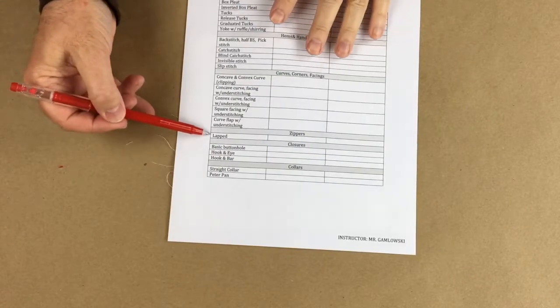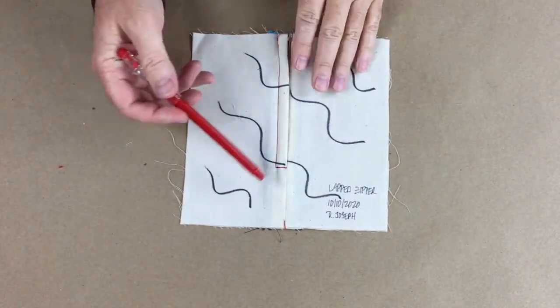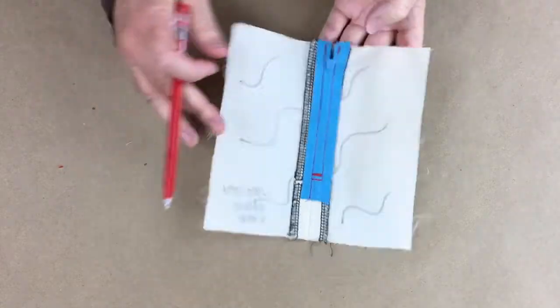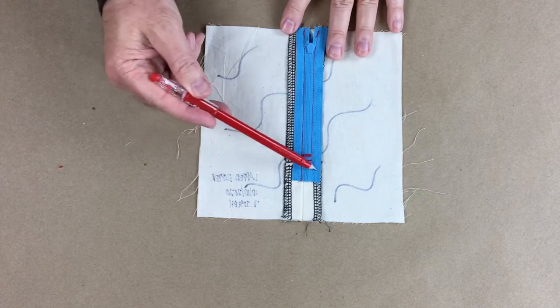Okay, so let's have a look at this lapped zipper. Here it is, this is the face side. Let's flip it over really quick to remind you that we actually did shorten the zipper.